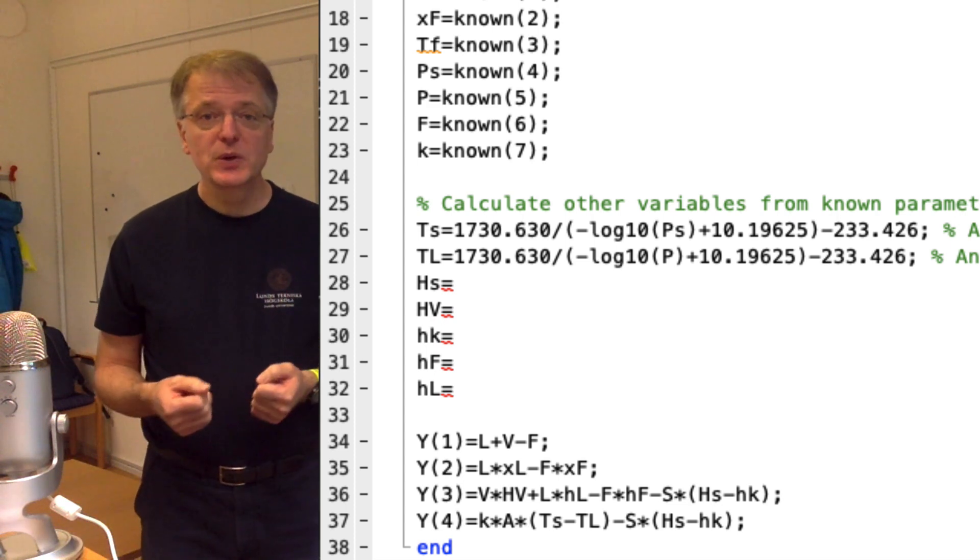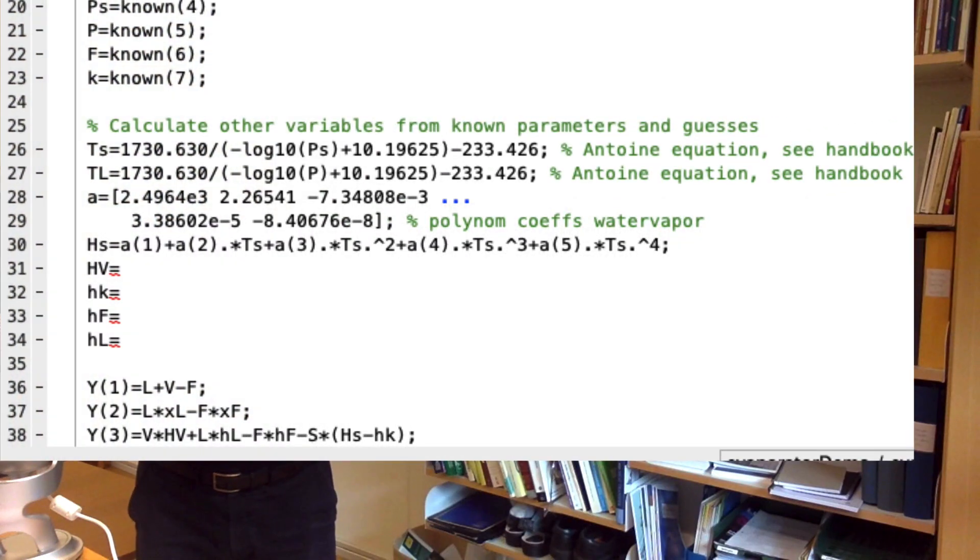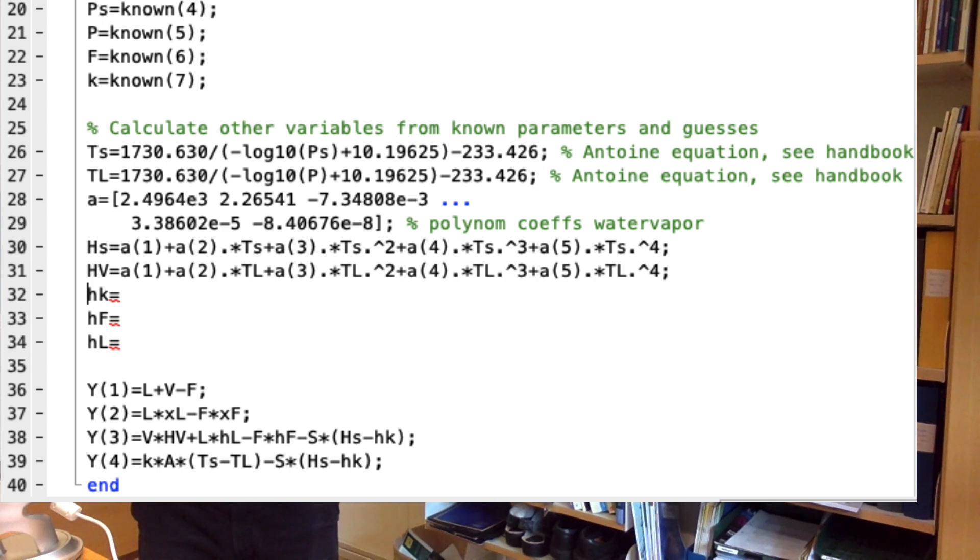For the enthalpy of the steam, we use a temperature polynomial found in the literature and we use the same equation for the enthalpy of the vapor leaving the system.